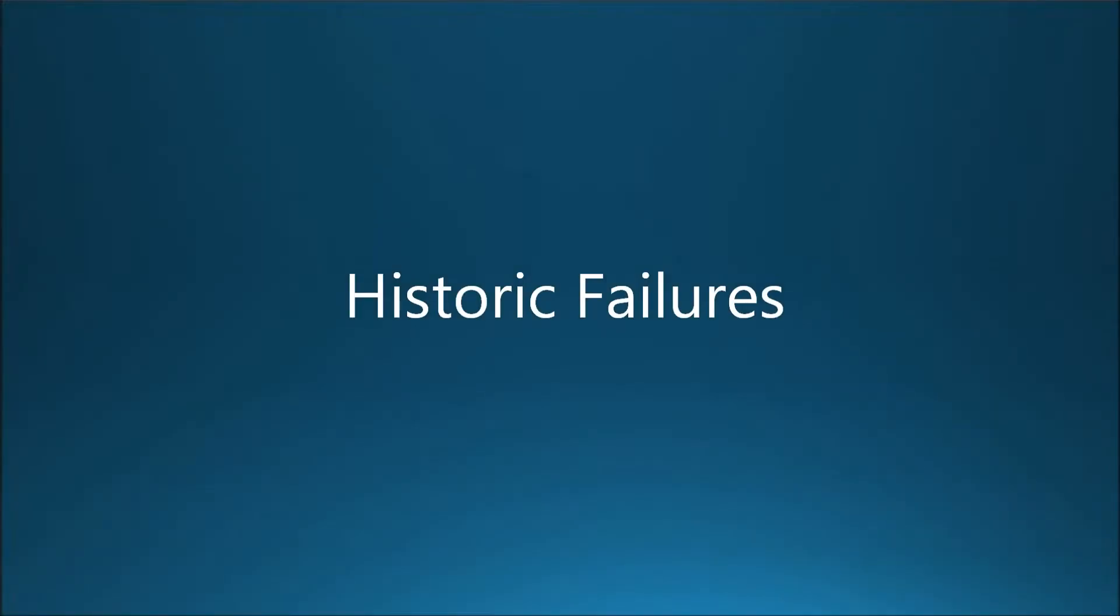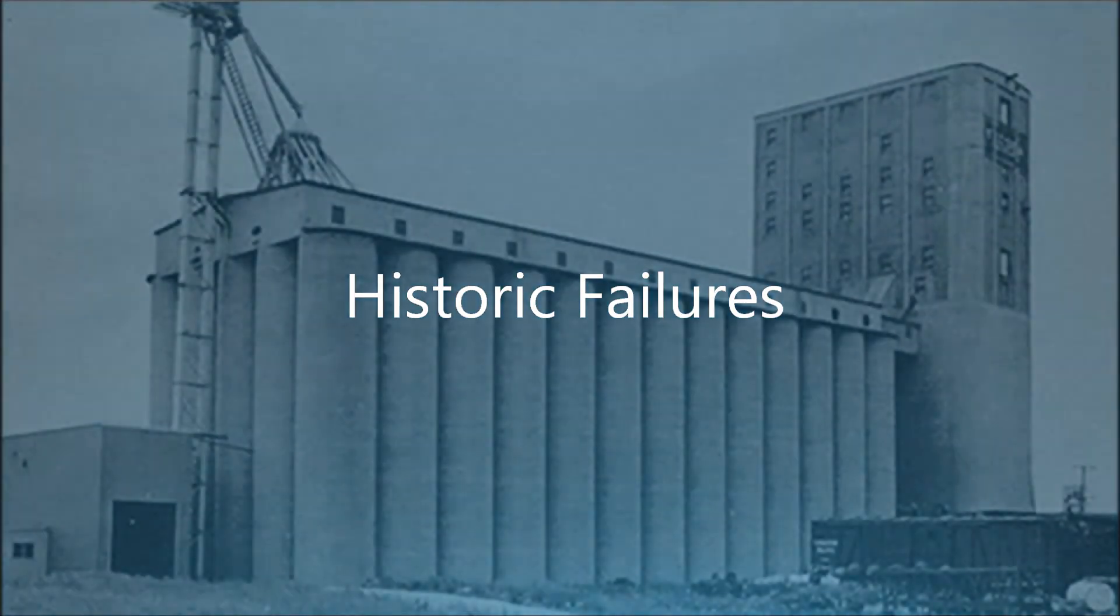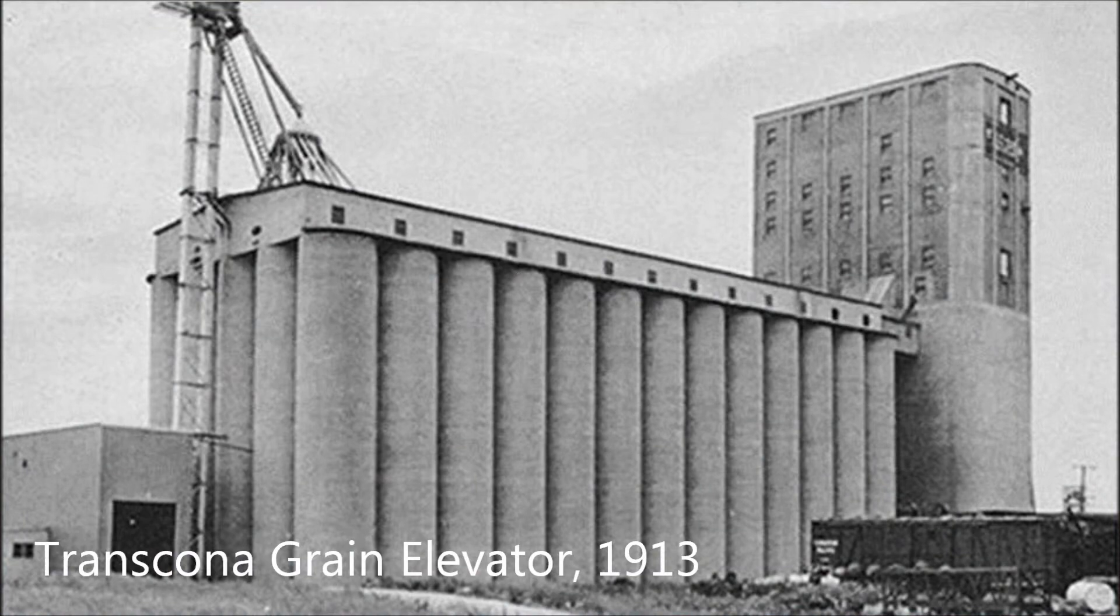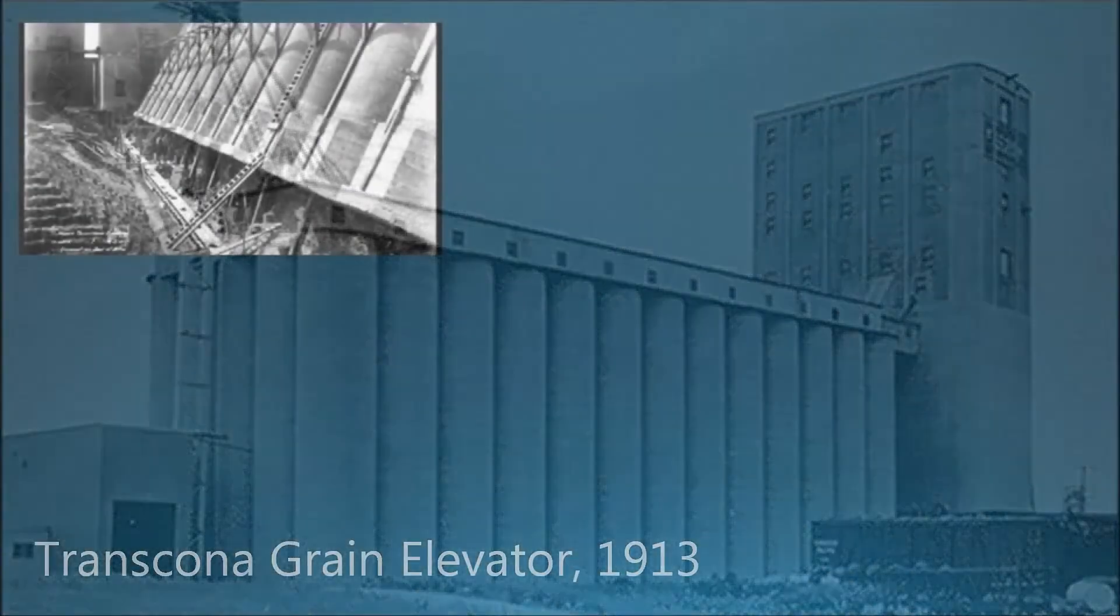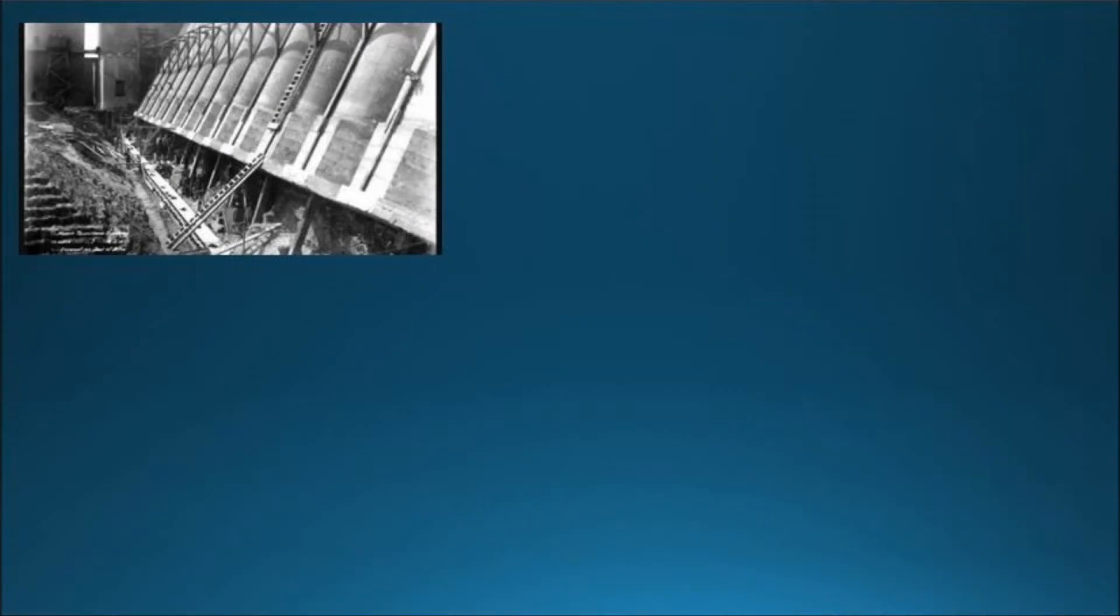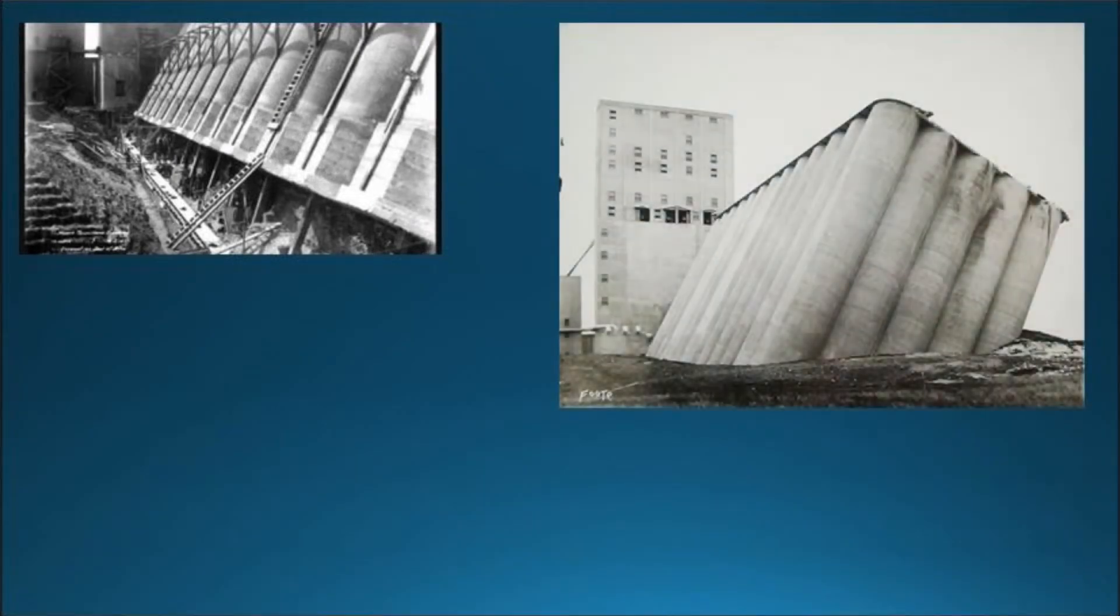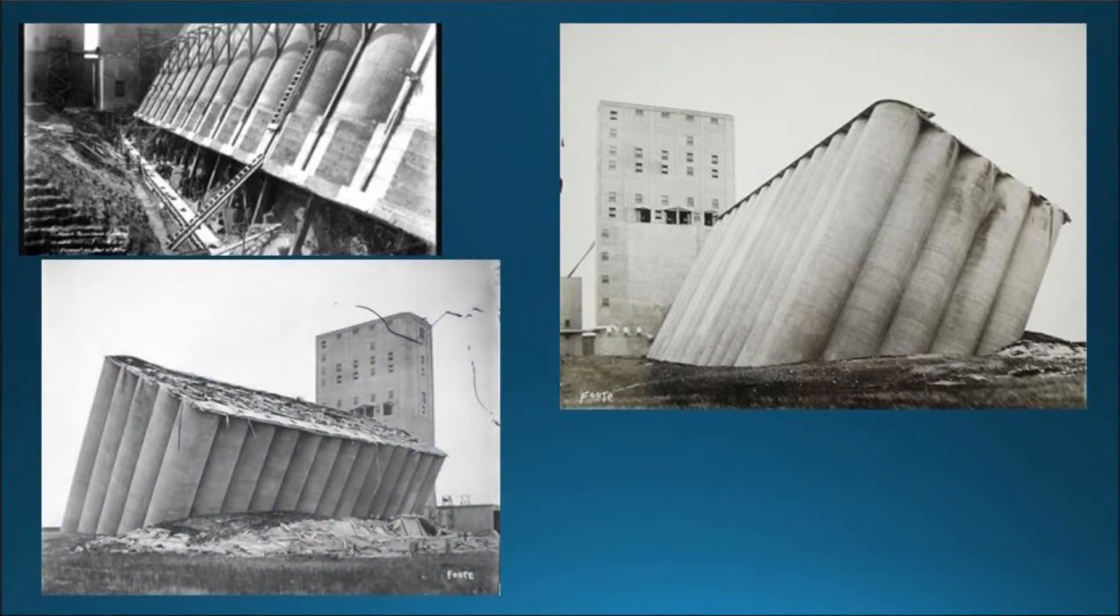Over the years there have been several extreme instances of bearing capacity failure. One historic event involved the Transcona Grain Elevator constructed in Manitoba, Canada. The elevator design had overestimated the bearing capacity of the soil and underestimated the load from the grain. This led to the structure experiencing a sudden and dramatic general shear failure.